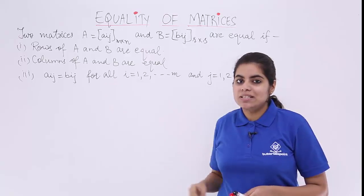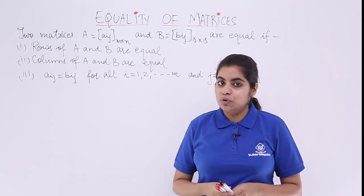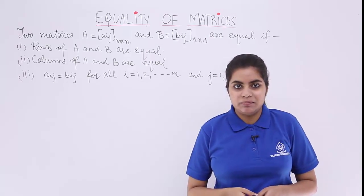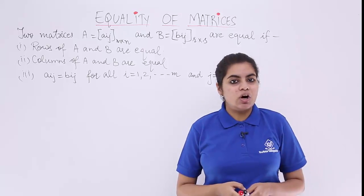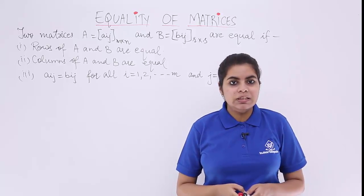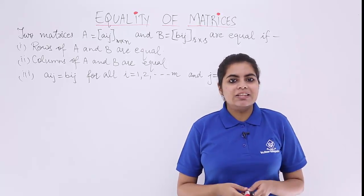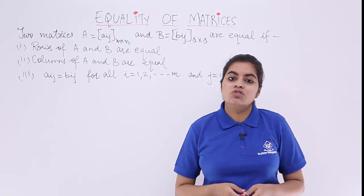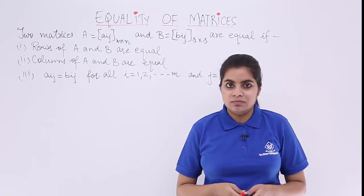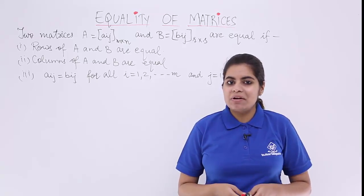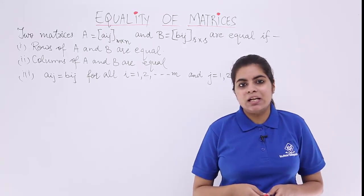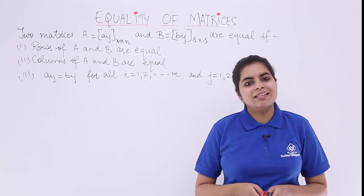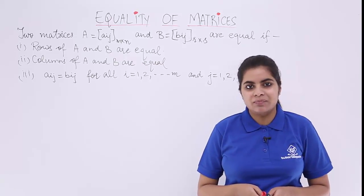The first condition is that the rows should be equal. The second is that the columns should be equal, and the third is that every element of the two matrices should be equal. If still not understood, let's see the theoretical approach we are going to follow, and we'll be seeing a few examples.